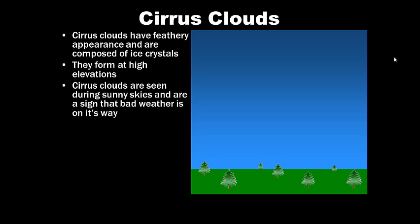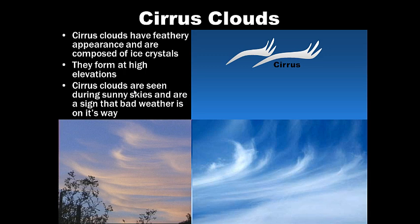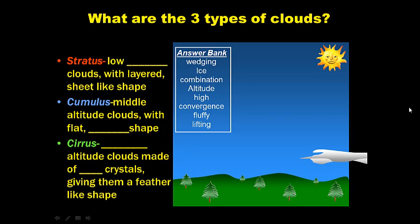And then, finally, way high up in our atmosphere, we have what are known as cirrus clouds. Cirrus clouds have feathery appearance and are composed of ice crystals. That's right, not water, but ice crystals. They form, because they form so high up in the sky where it's cold, you get ice. So, cirrus clouds are made of ice crystals. Cirrus clouds are a sign that bad weather may be on its way. So, they have that wispy appearance. And they're made of ice crystals. So, you can see their appearance there.